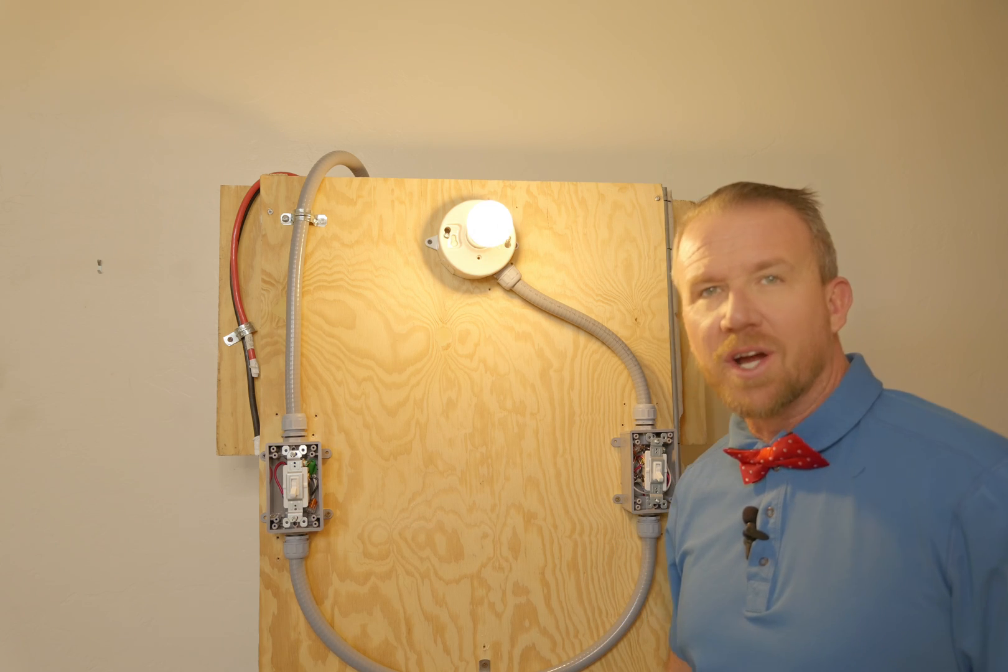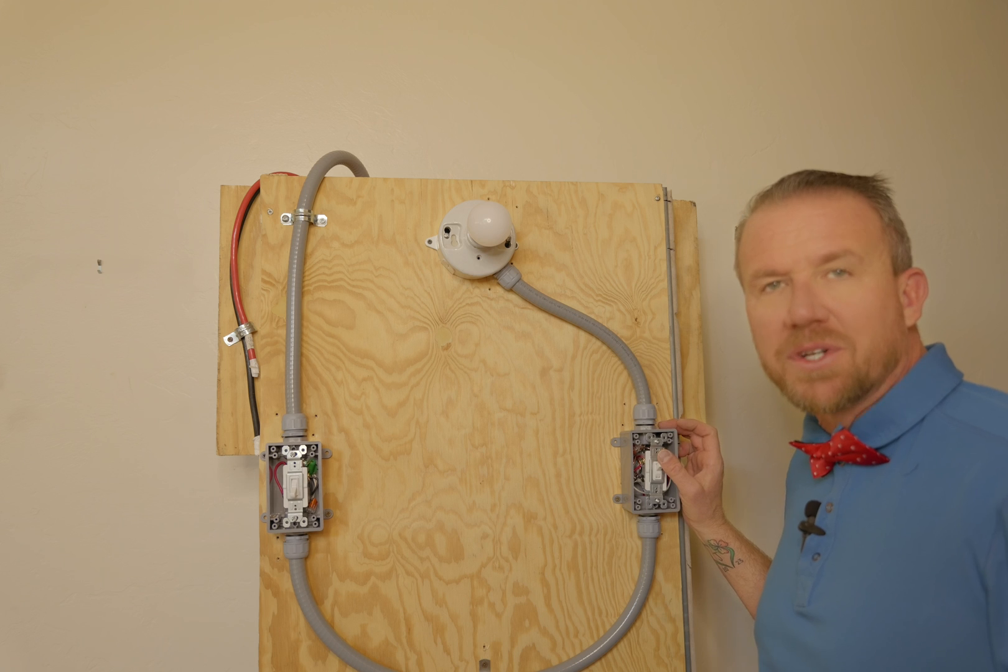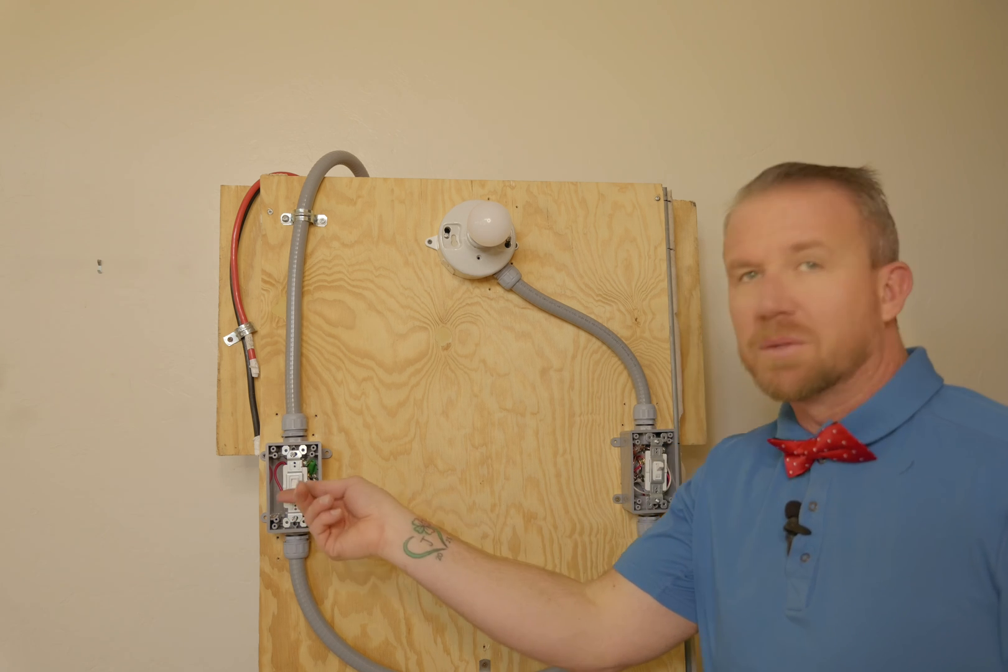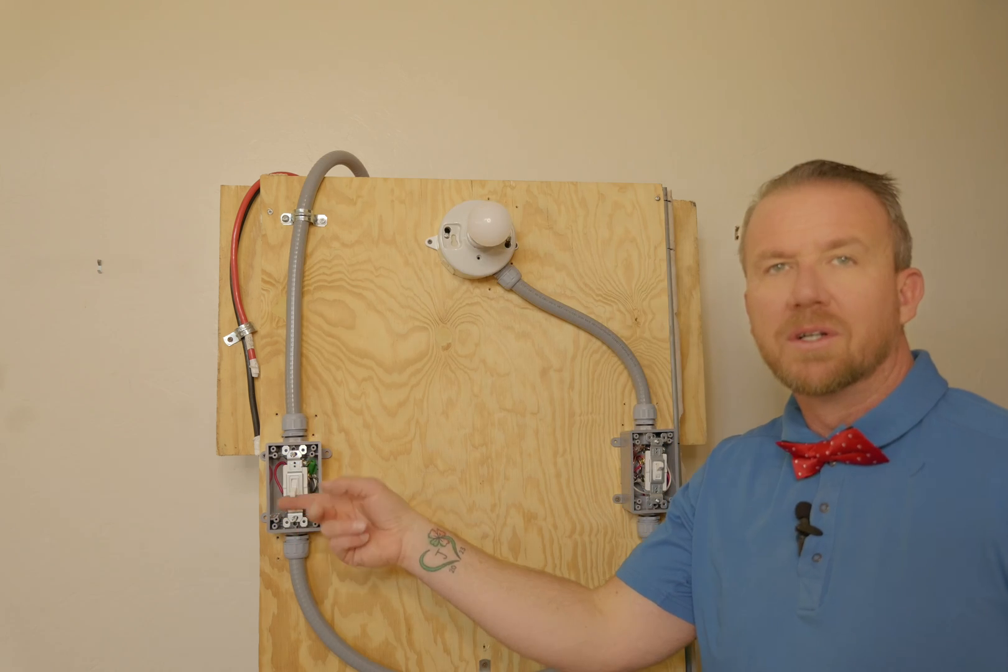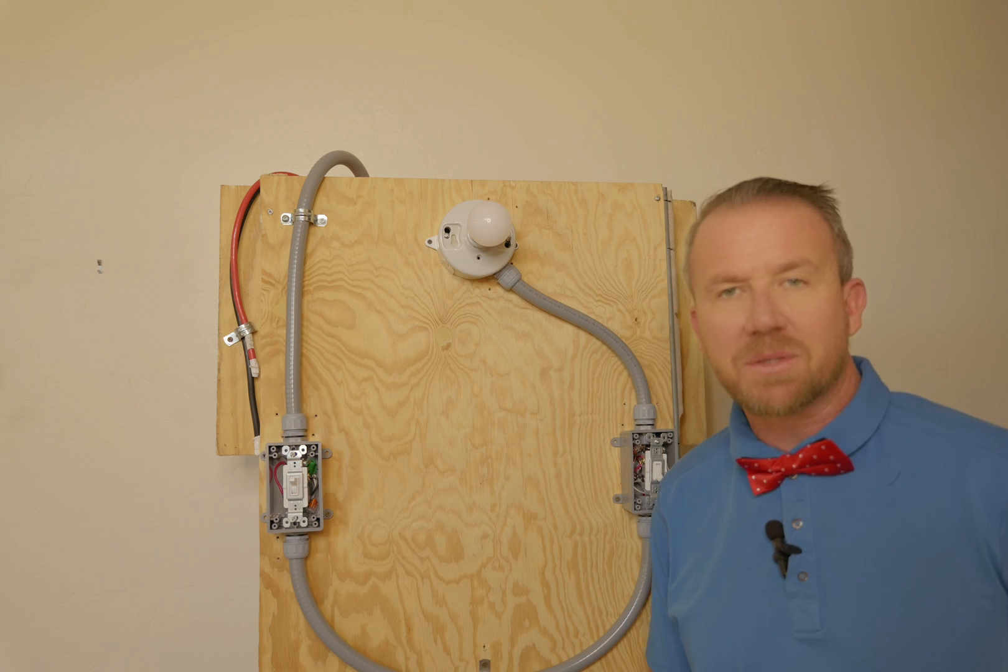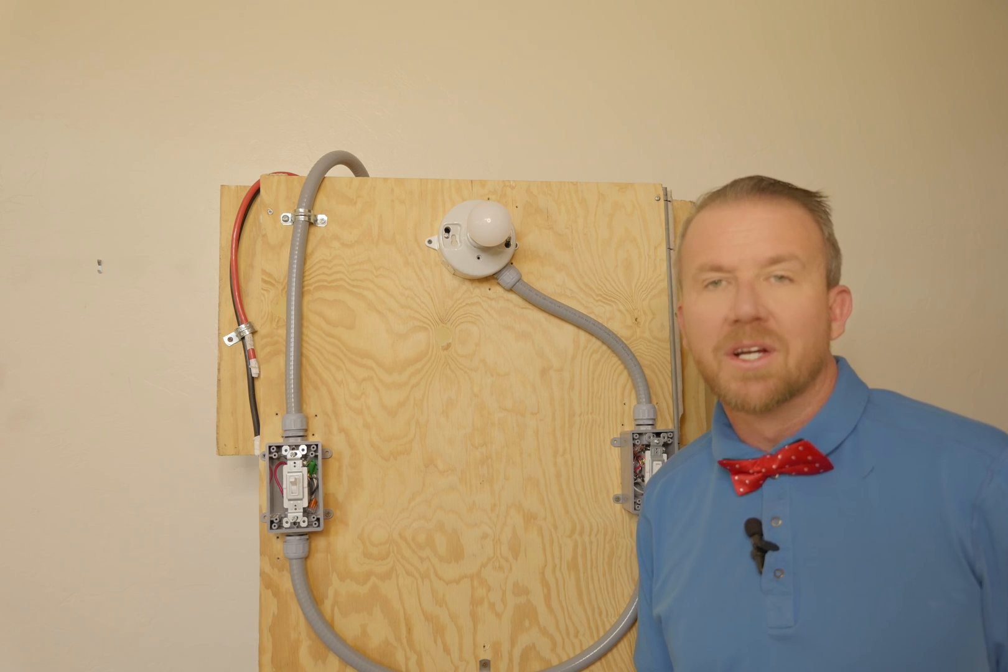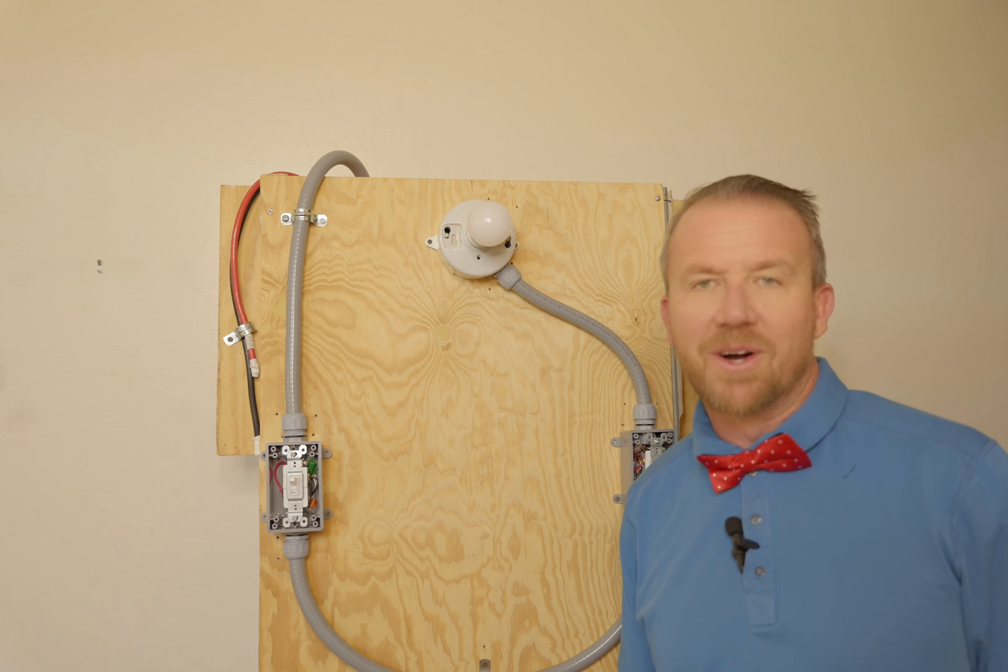And of course, there you go. The first switch turns it on. The other one turns it off. You can move back and forth. And that's how you wire in a three-way switch, most commonly used on either side of a room or, most commonly, top and bottom of a stairwell.